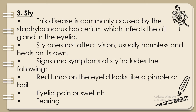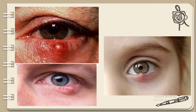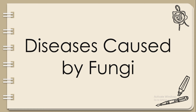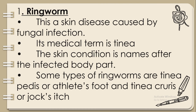Number three: Stye. This disease is commonly caused by the Staphylococcus bacterium, which infects the oil gland in the eyelid. Stye does not affect vision, is usually harmless, and heals on its own. Signs and symptoms of stye include a red lump on the eyelid that looks like a pimple or boil, eyelid pain, or swelling and tearing.